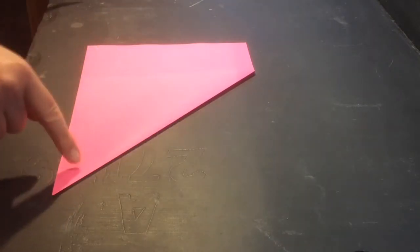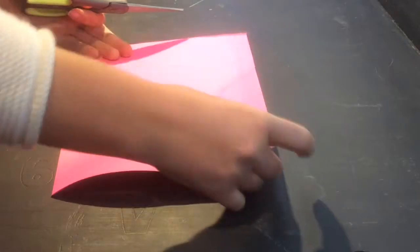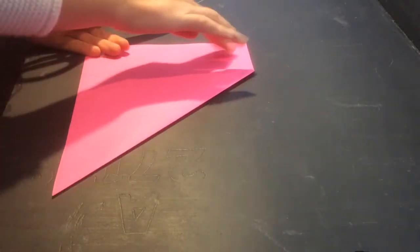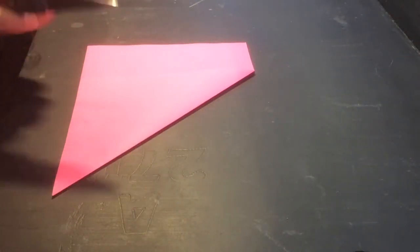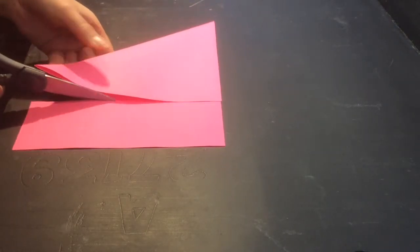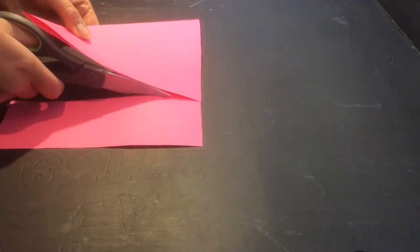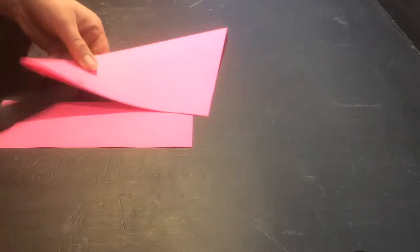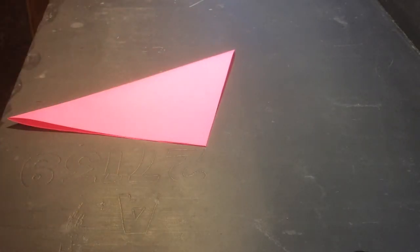What we need is a square bit of paper, so by doing this we then have a square. We don't actually need this edge here, so we're going to cut that off. Now there we are, so that can be put to one side.